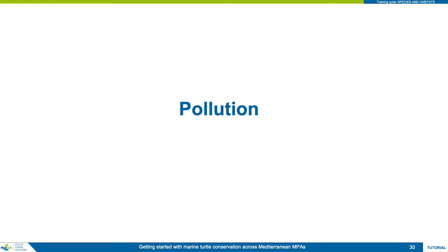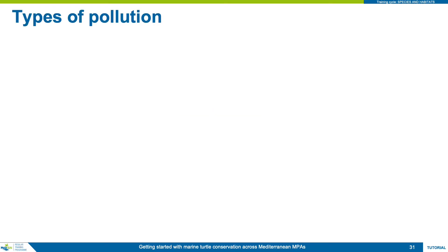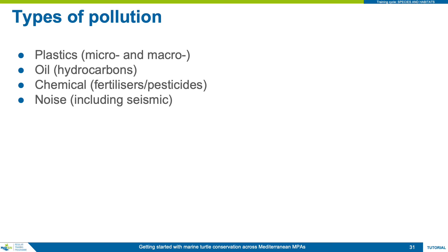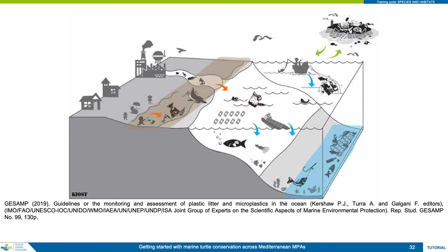The next catch-all threat topic is pollution, which ranked quite highly in the threat matrices presented at the start of this module. Pollutants affecting marine turtles vary widely from transient to long-term, from highly visible to invisible. The two pollutants that get most attention in media are plastic and oil pollution, with chemical and noise pollution making up the other main impactful pollutants. A dishonourable mention goes to light pollution — light sources at sea at night, for example from boats and oil rigs, act as lures for hatchlings that would otherwise swim out to the open sea, making them easy targets for predatory fish.